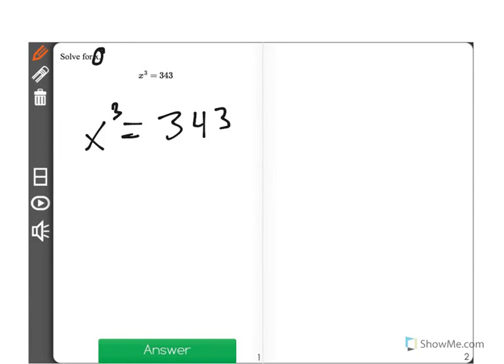And while it may look like we have x all alone here, we actually have x cubed, which is not x. It's x times x times x. So you're asked, how do we get x all alone?